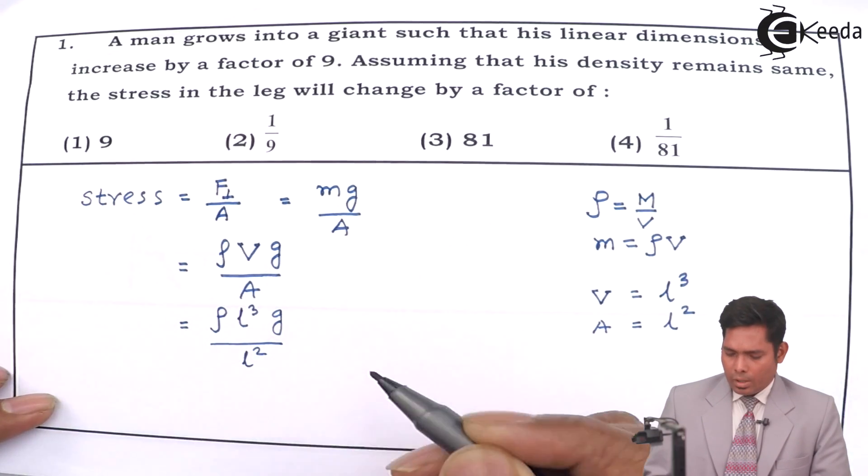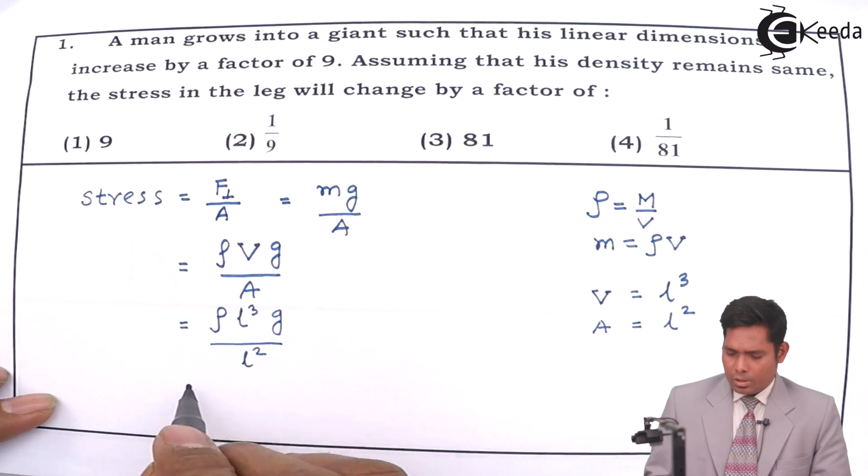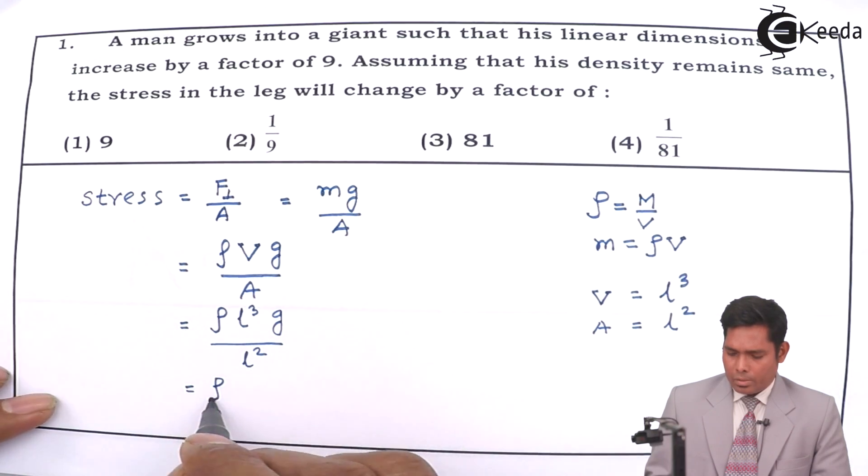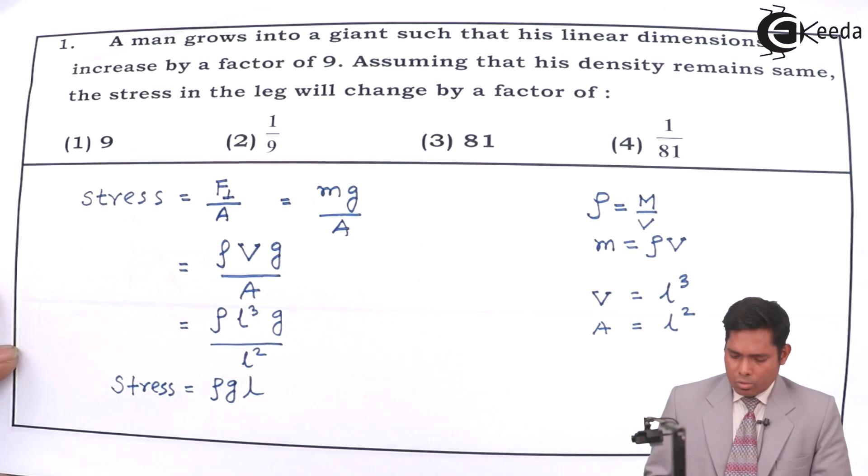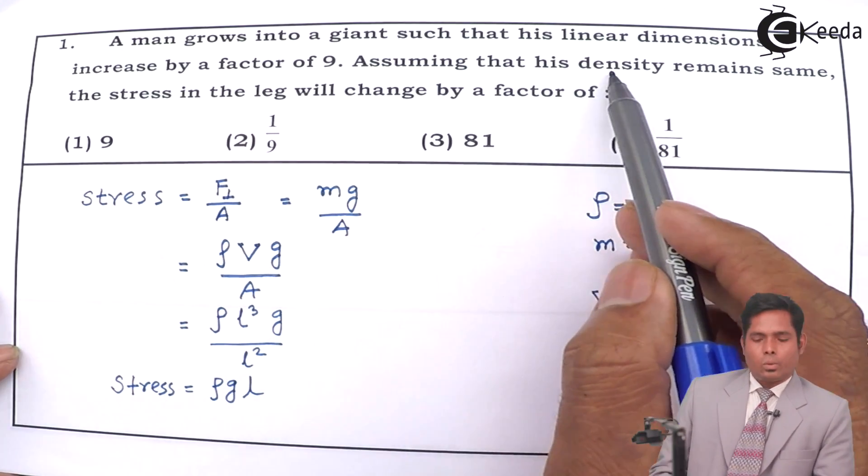So, this is L to the power 3 times g upon L square. So, here this will be ρ times g and L. The stress is ρgL.